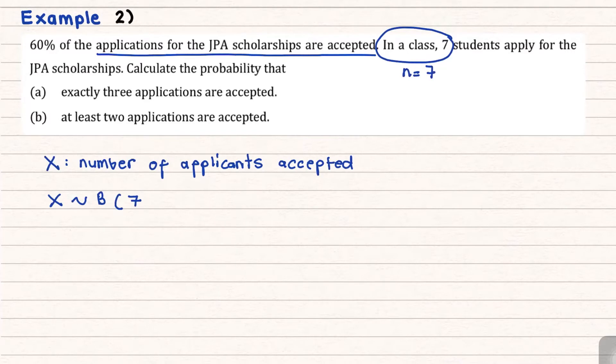And the probability of success is over here, which is P. 60% if you change into probability is 0.6. Now, let's answer part A.